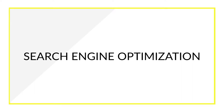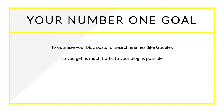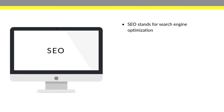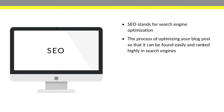Welcome back. This is search engine optimization. Your number one goal with SEO is to optimize your blog post for search engines like Google, so you get as much traffic to your blog as possible. SEO stands for search engine optimization — it's basically the process of optimizing your blog posts so they can be found easily and ranked highly in search engines. Let's take a look at what SEO looks like in action.